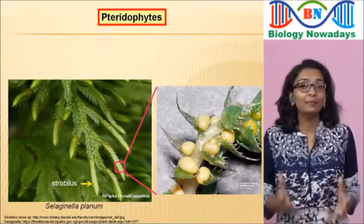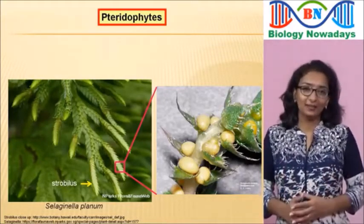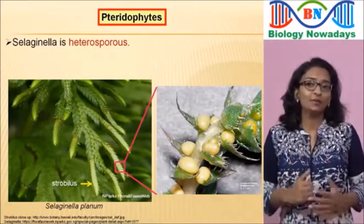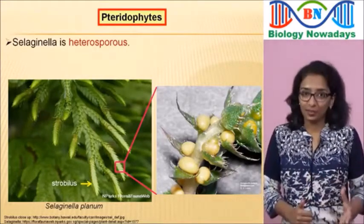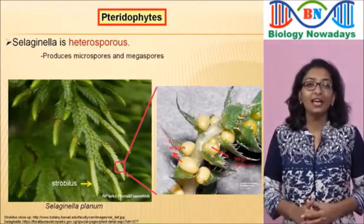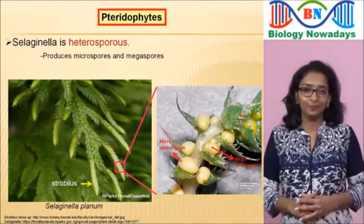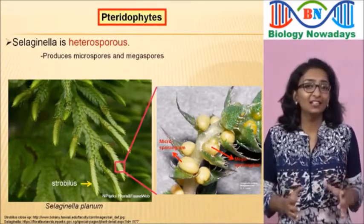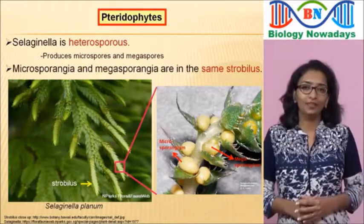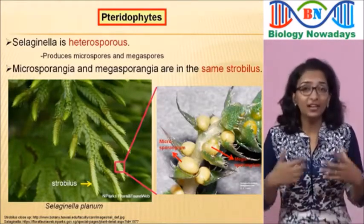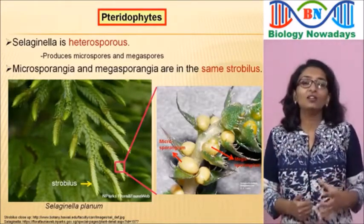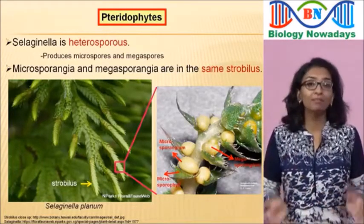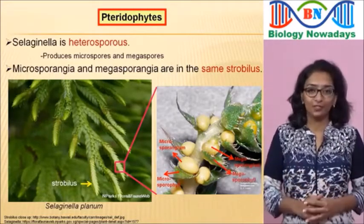Selaginella is special among pteridophytes because it is heterosporous, which means that it produces two types of spores: microspores in microsporangia and megaspores in megasporangia. Microsporangia and megasporangia are seen in the same strobilus. Sporophylls bearing microsporangia are called microsporophylls, and sporophylls bearing megasporangia are called megasporophylls.